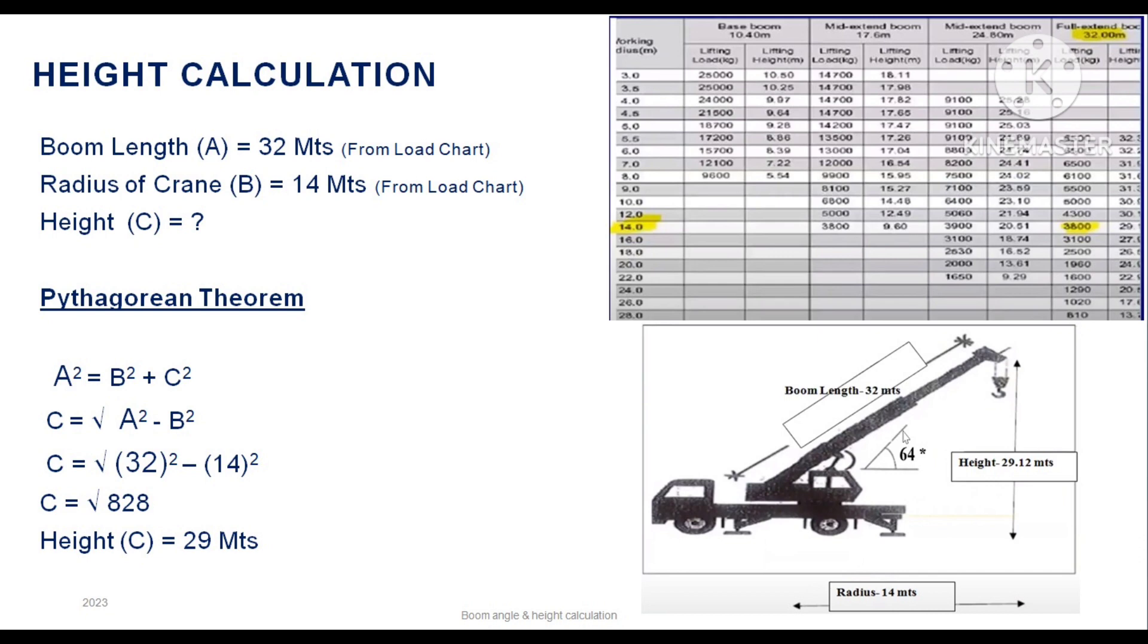The boom length and the boom radius you will get directly from the load chart depending upon your site visit. C, which is the height of the crane, has to be calculated. Now, if you can see this crane diagram, it clearly shows it's a right angle triangle.